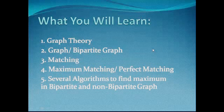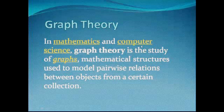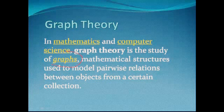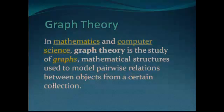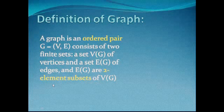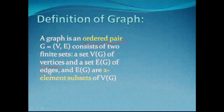We will also find several algorithms to find the maximum matching in bipartite and non-bipartite graphs. Graph theory is a very important field in mathematics and computer science. Graph theory is the study of graphs — mathematical structures used to model pairwise relations between objects from a certain collection. A graph is an ordered pair G = (V, E) consisting of two finite sets: a vertex set V(G) and an edge set E(G), where E(G) is a two-element subset of V(G).